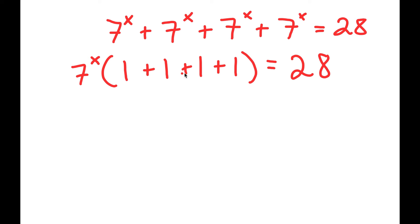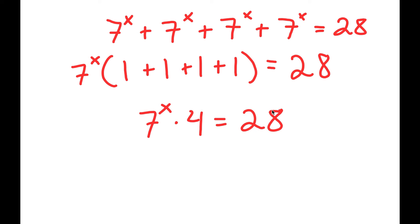Now, 1 plus 1 plus 1 plus 1 is 4. So I get 7 to the power of x times 4 is equal to 28.